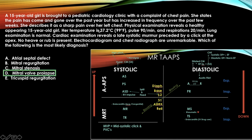The next question: a young girl with a systolic click = mitral valve prolapse. That's the giveaway.